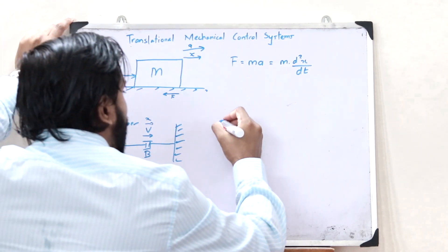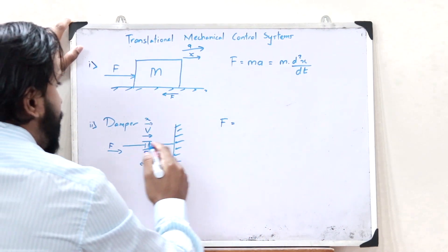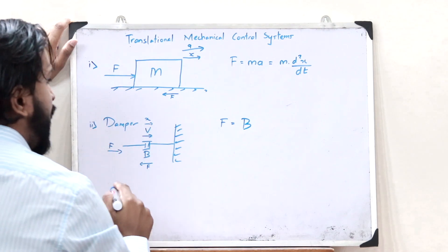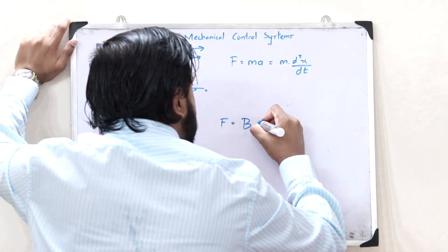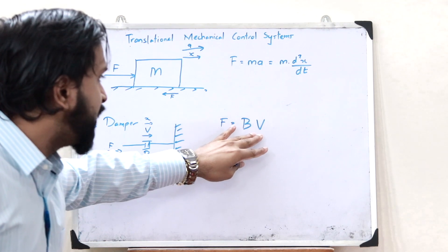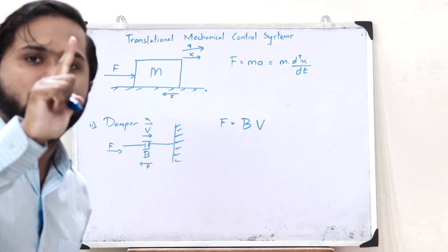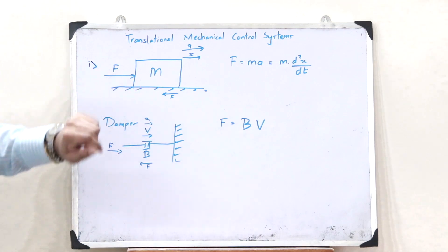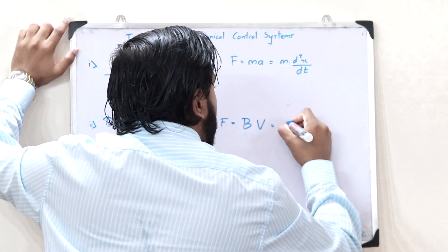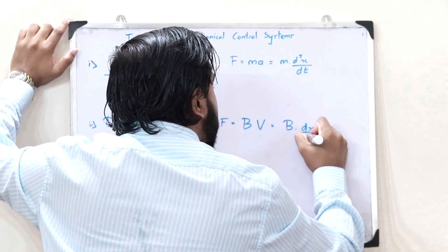This restoring force is given as F equals the damping constant b into the velocity v. We also know that velocity is the first order derivative of displacement. So therefore we get F equals b into dx/dt.